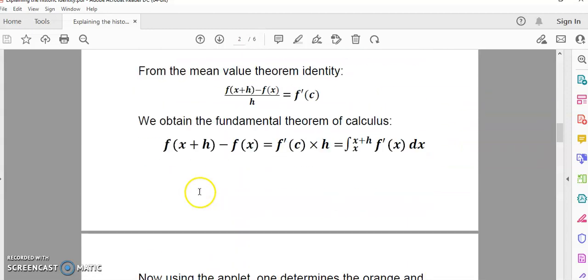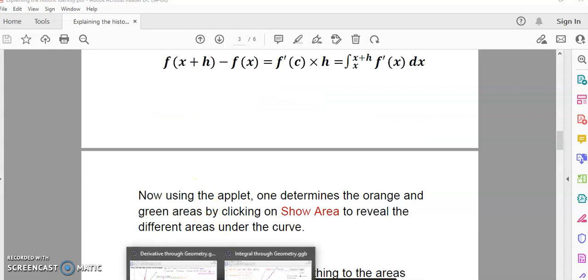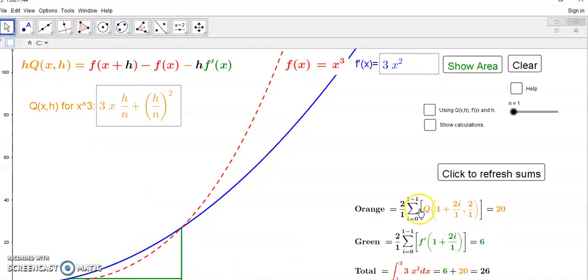So where you'll see that the green areas as I described them here, the green areas are for the function, the derivative function, and the orange areas for this expression over here.